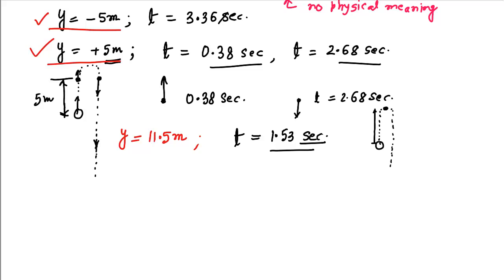To summarize, when y is a quadratic function of time, there are three possible situations. First, both roots are positive: one corresponds to the upward journey, the other to the downward journey. Second, one root is positive and one is negative: discard the negative root and keep the positive one. Third, both roots are equal and positive: this corresponds to the highest point, where velocity is zero. Having both roots negative is not physically possible in this context.